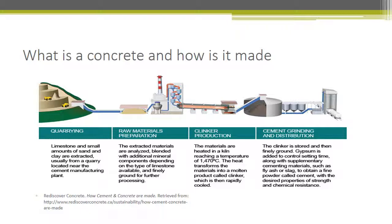The cement grinding and distribution stage follows. The clinker is stored and then fine-ground. Gypsum is added to control the setting time, along with supplementary cementing materials such as fly ash and slag, to obtain a fine powder called cement with the desired properties of strength and chemical resistance.